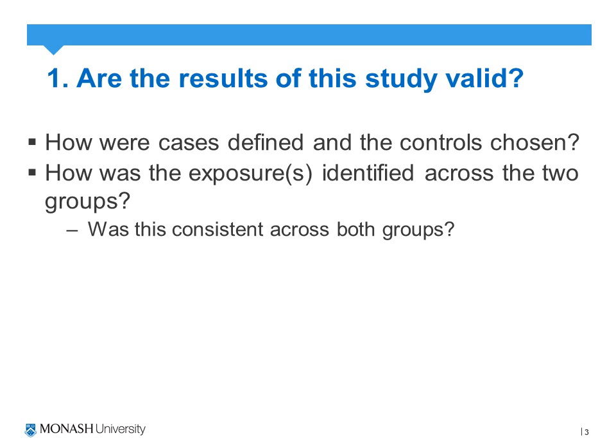There is a slight difference between the two, and that difference relates to the first point in which we ask whether the results of this study are valid. Running through the questions, the first question asks how were cases defined and controls chosen. This obviously relates to an aspect of selection bias.